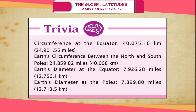Trivia: The circumference of the equator is 40,075.16 kilometers (24,901.55 miles). Earth's circumference between the North and South Poles is 40,008 kilometers (24,859.82 miles). Earth's diameter at the equator is 12,756.1 kilometers (7,926.28 miles), and Earth's diameter at the poles is 12,713.5 kilometers (7,899.80 miles).